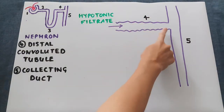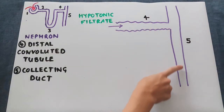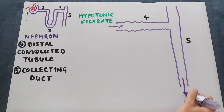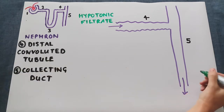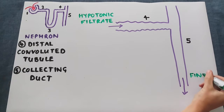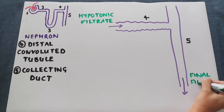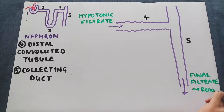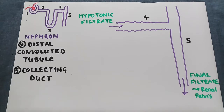By the end, having gone through the distal convoluted tubule and then the collecting duct, we have the final filtrate which is produced. This goes to the renal pelvis in the kidney, which then takes it to the ureter, then to the bladder, and then out through the body via the urethra.